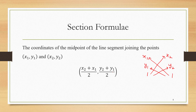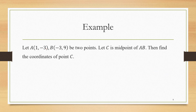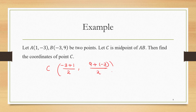Let's do an example. A is (1,-3), B is (-3,9), and C is the midpoint of AB. We have to find the coordinates of C. C is given by (x2+x1)/2, (y2+y1)/2. That is C = ((-3+1)/2, (9+(-3))/2) = (-2/2, 6/2) = (-1, 3). So C is (-1, 3).